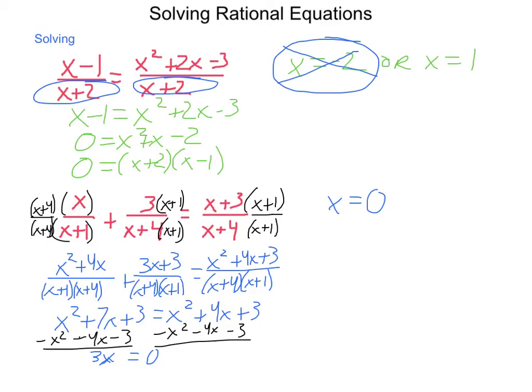So if I do that, I'm going back and check. What I will have is 0/(0+1) + 3/(0+4) = (0+3)/(0+4). Now simplifying, we have 0 + 3/4 = 3/4. And that checks out. So our solution here is x = 0.